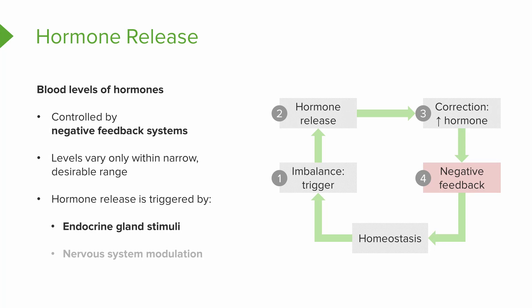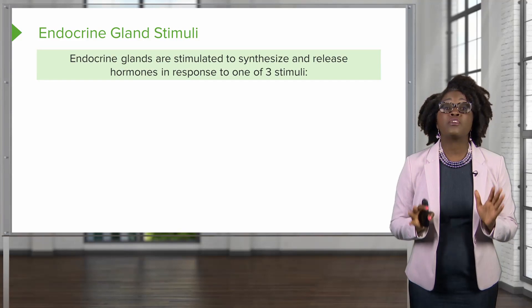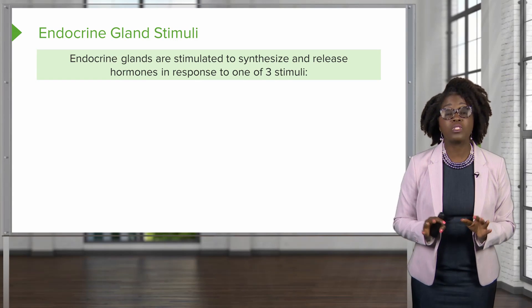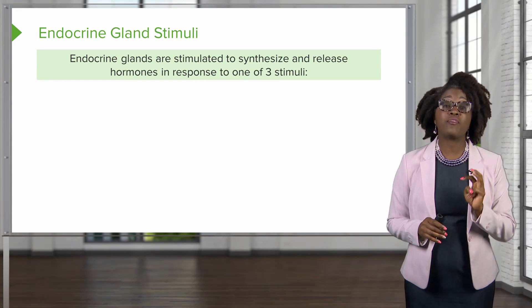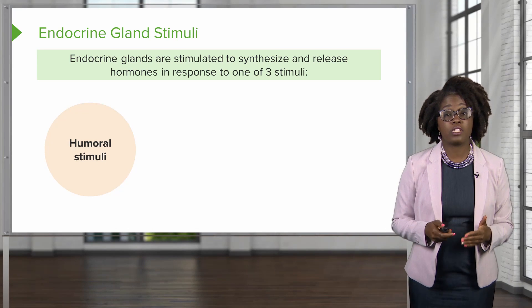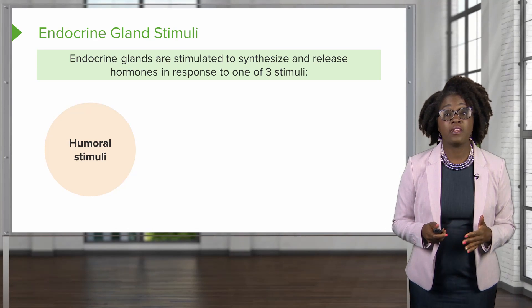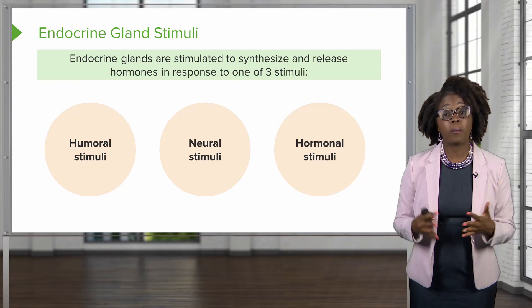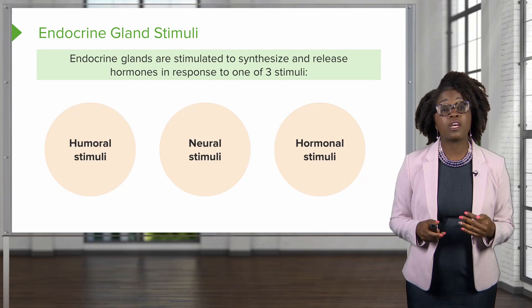Hormone release can be triggered by endocrine gland stimuli as well as nervous system modulation. Endocrine glands can be stimulated to synthesize and release hormones in response to three different types of stimuli: the first is the humoral stimuli, second, neural stimuli, and third, hormonal stimuli. Let's take a closer look.